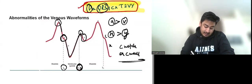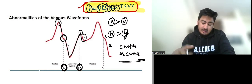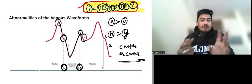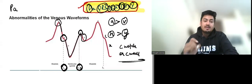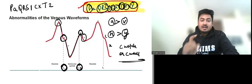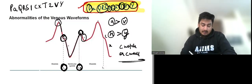The QRS complex represents ventricular depolarization, and ventricular contraction produces the c wave, so QRS comes before c wave and x descent. The T wave represents ventricular repolarization, so T wave comes before the v wave. The full sequence is: P wave on ECG → a wave on JVP → QRS on ECG → S1 heart sound → c wave and x descent on JVP → T wave on ECG → S2 heart sound → v wave and y descent on JVP. S1 is just before the c wave and S2 is just before the v wave.